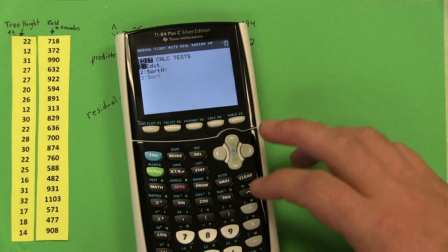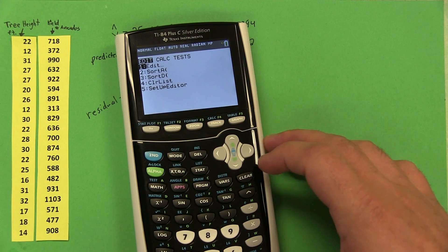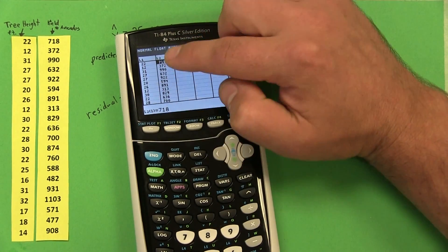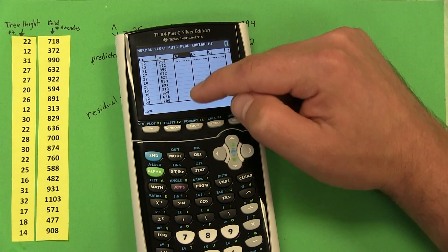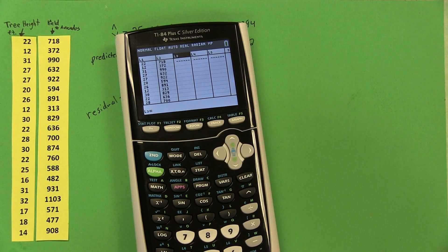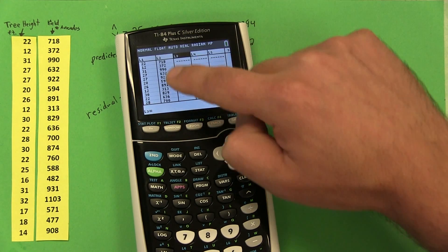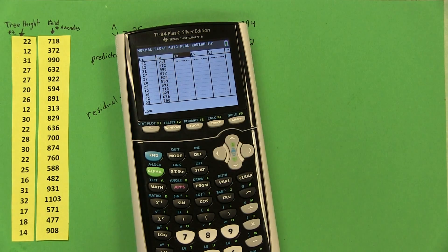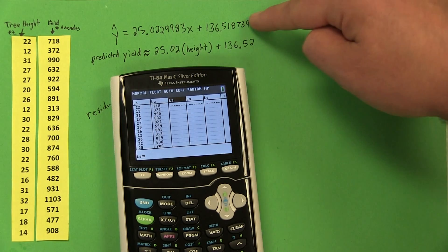Residuals are the observed value, what we actually have in our table here, minus the expected value, what our model would predict. So I'm going to show you how to calculate residuals on the calculator right now. If we go back to our table, so stat and then edit, here's our table, here's our explanatory variable and our response variable. I'm going to make list 3 equal to what our model would predict. So here's what actually happened, our observed. This is going to be what we'd expect. So we have to utilize this equation right here.